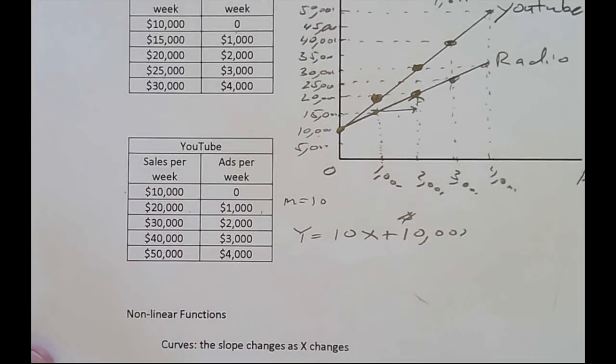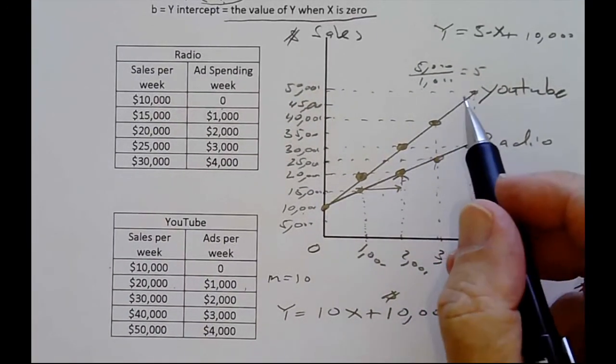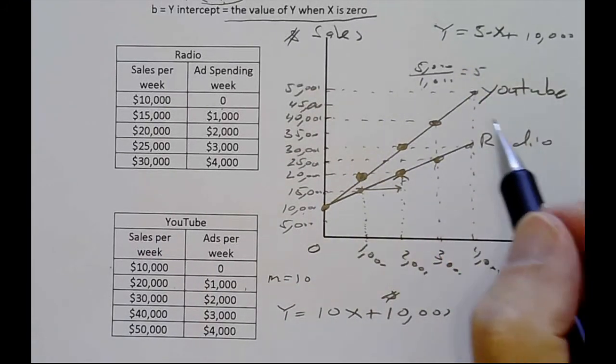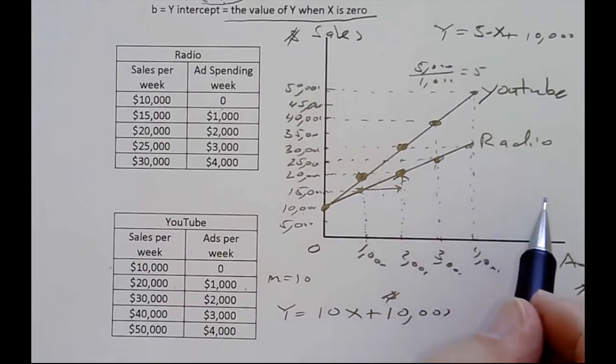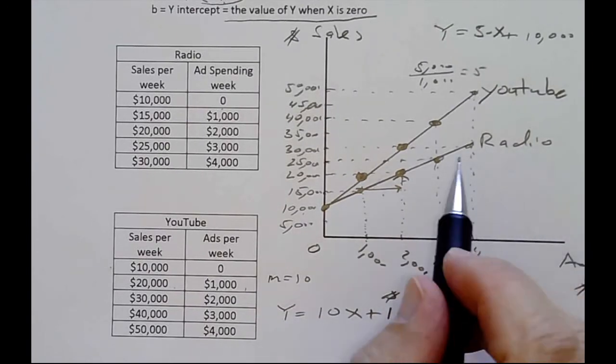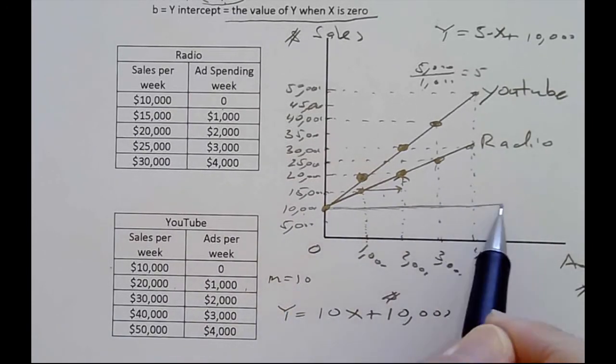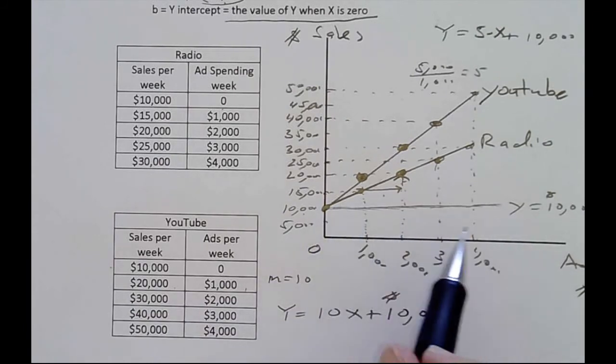You can see that the steeper the line, the more impact the x variable has on the y variable. A much steeper line means that this variable is affecting the y variable much more each time. A flatter line means there's less of an effect from the x variable on the y variable. In fact, if the line was flat, the equation would be Y equals $10,000. There's no slope because every time you increase your ads by $1,000, nothing happens to your sales. In this case, there would be no relationship between ads and sales.